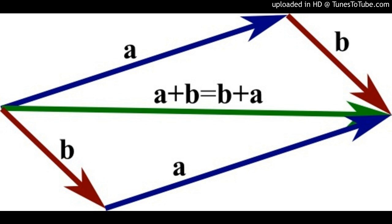For any vector A bar, you should remember certain things: 1 into A bar is the same as A bar. Minus 1 into A bar is minus A bar — the opposite vector of A bar. 0 into A bar is zero bar. And K into zero bar: if you have a zero vector and multiply it by K, K into zero bar is zero bar. This is very straightforward and easy to understand.